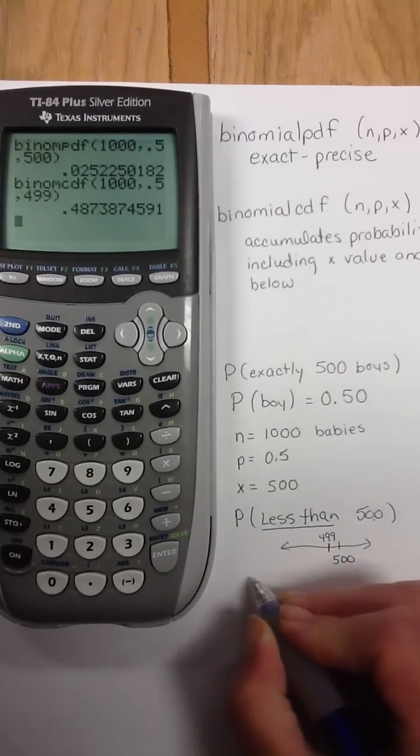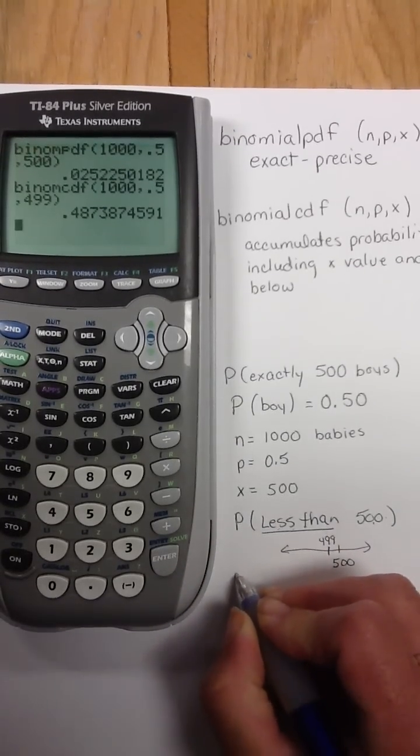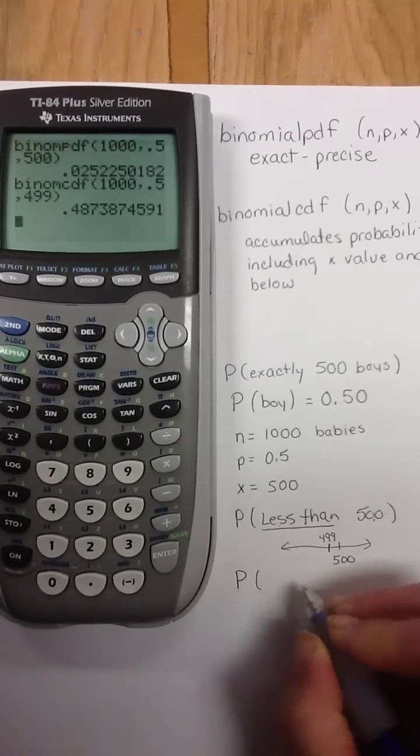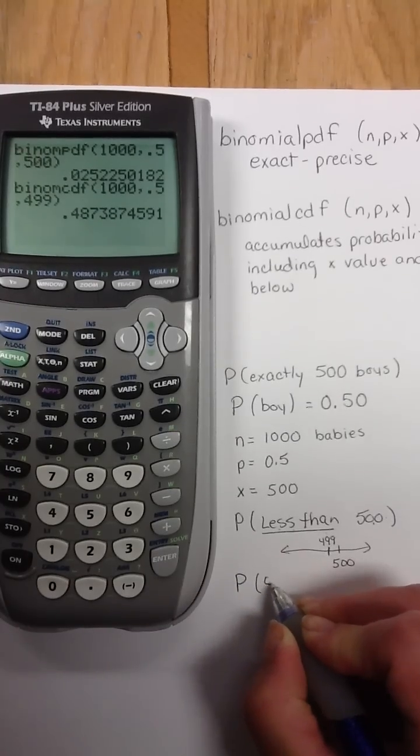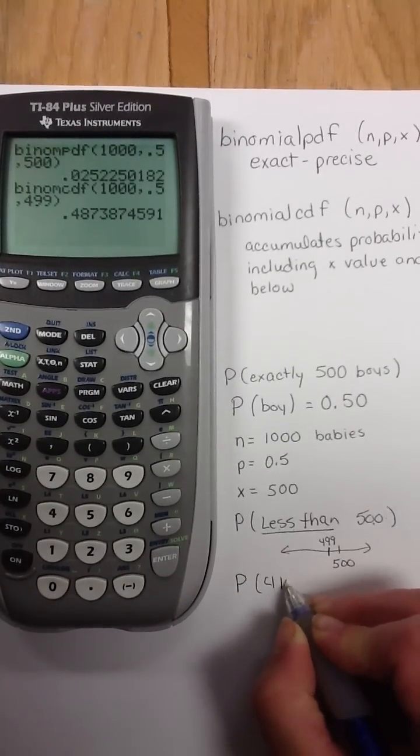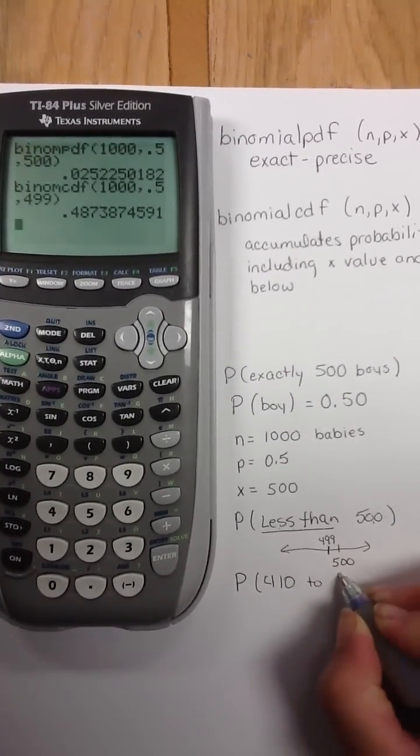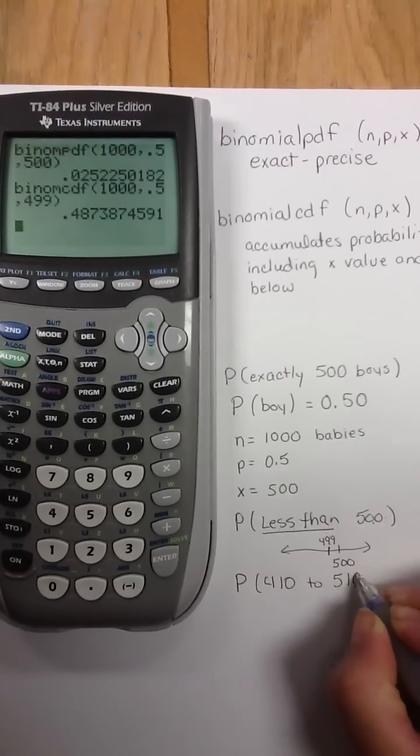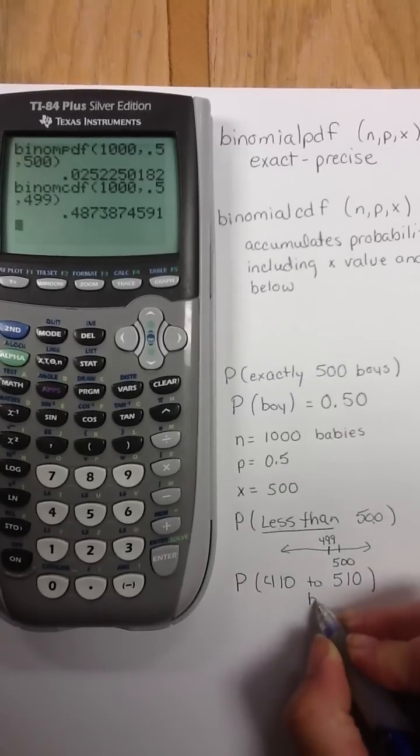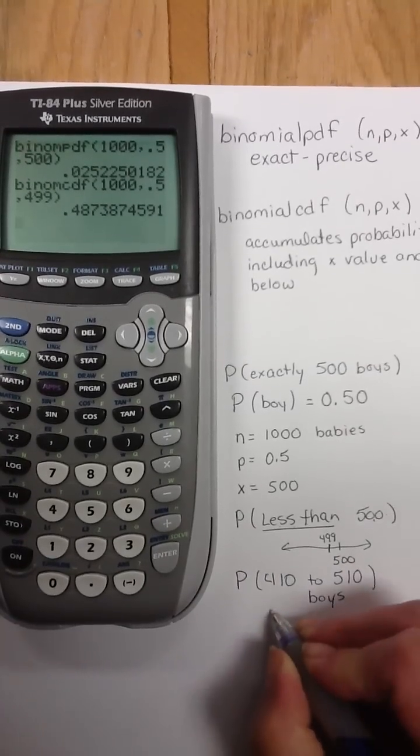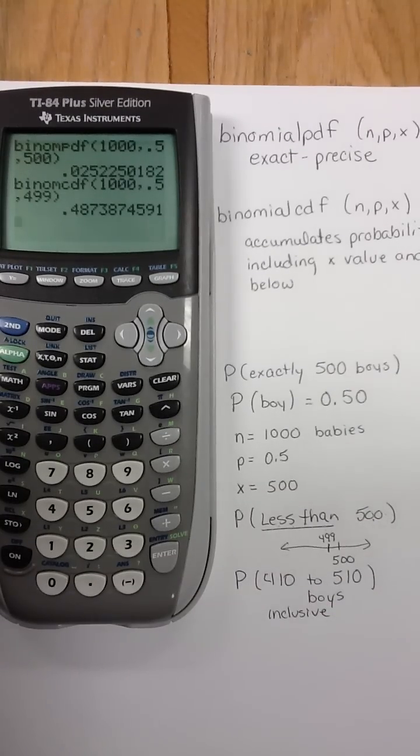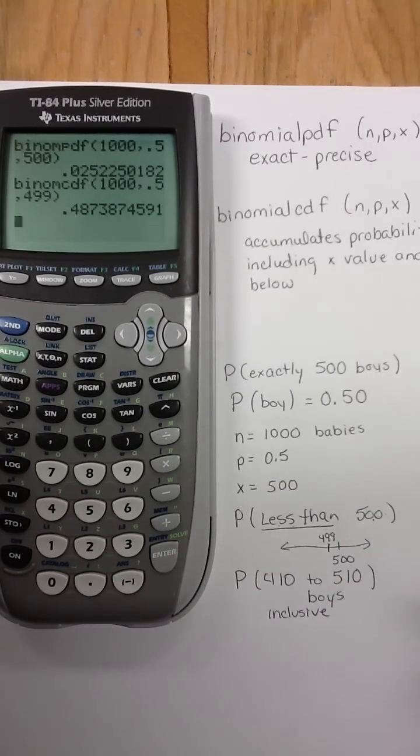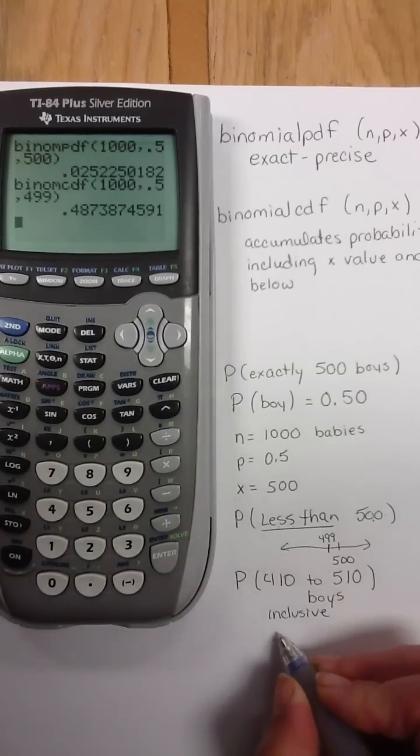Now, if I asked you a question where it said, what's the probability of having between 410 to 510 boys? And if we say this is inclusive, what we will have to do here is accumulate from 510 on down. Now, picture the number line for this.